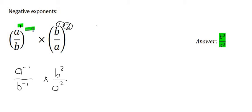Now what we can do is simply multiply across and across. And that's just going to give us a minus 1, b2. And then at the bottom we're going to have b minus 1 and a2. Now what we do is we stick to the basics.